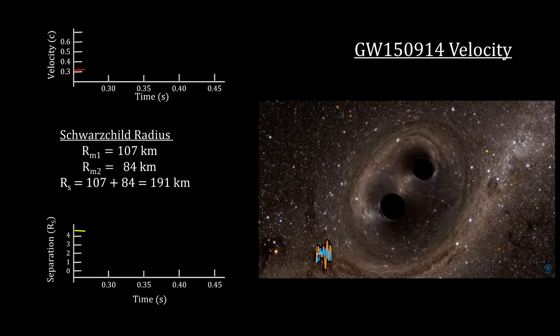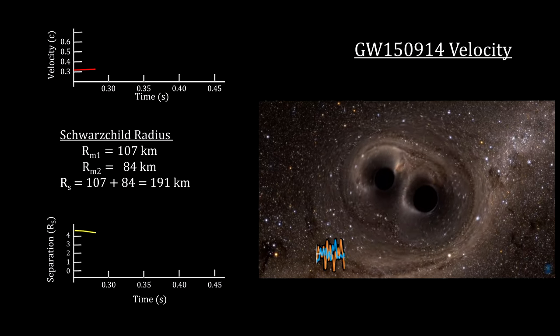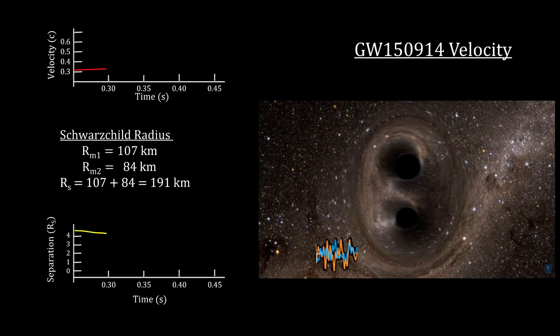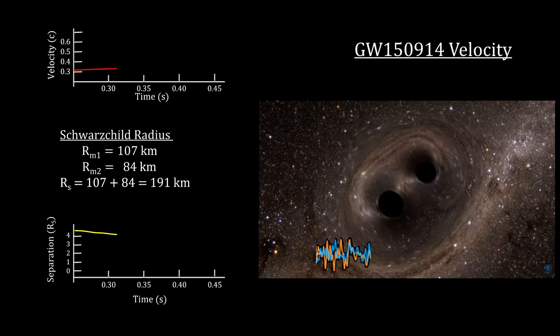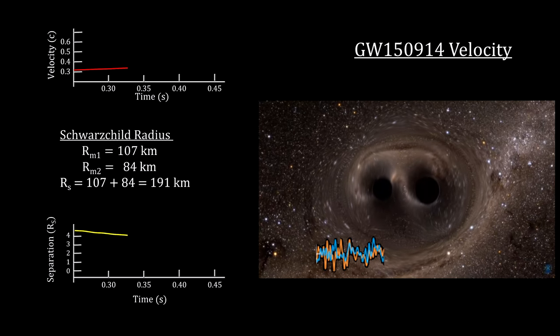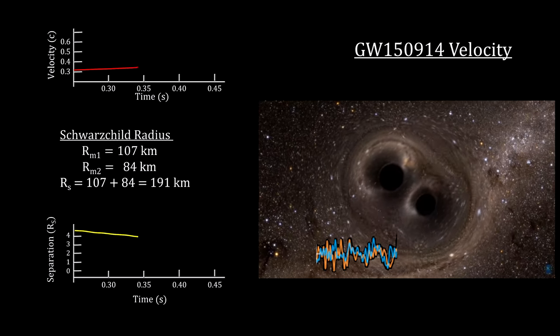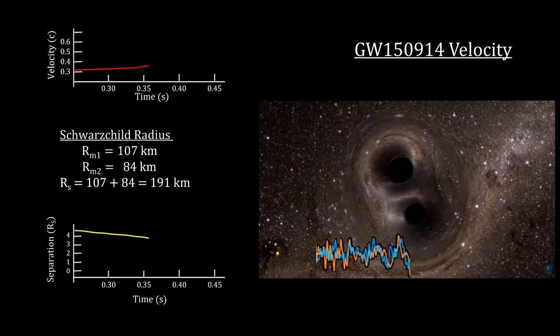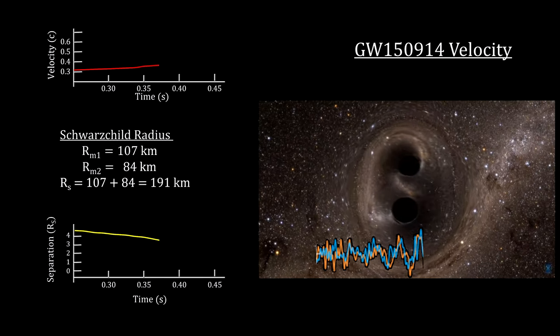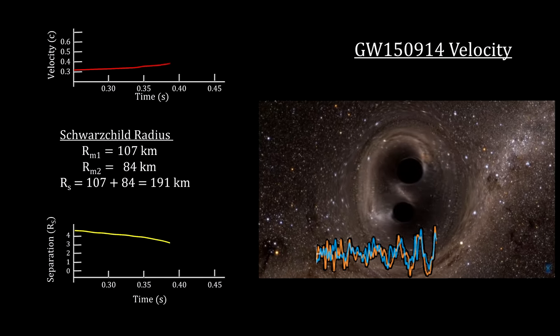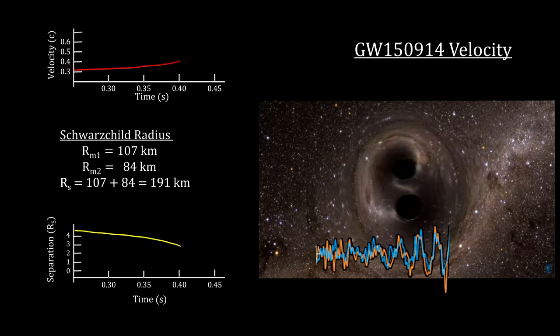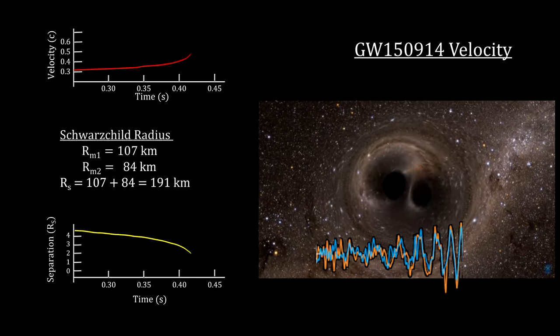During the last 200 milliseconds of their inspiral, the orbiting velocity of the black holes increased from 30% of the speed of light to 60% of the speed of light. Over the same period, the distance between the two black holes went from around 1,000 kilometers to just under 200 kilometers when their event horizons made contact.